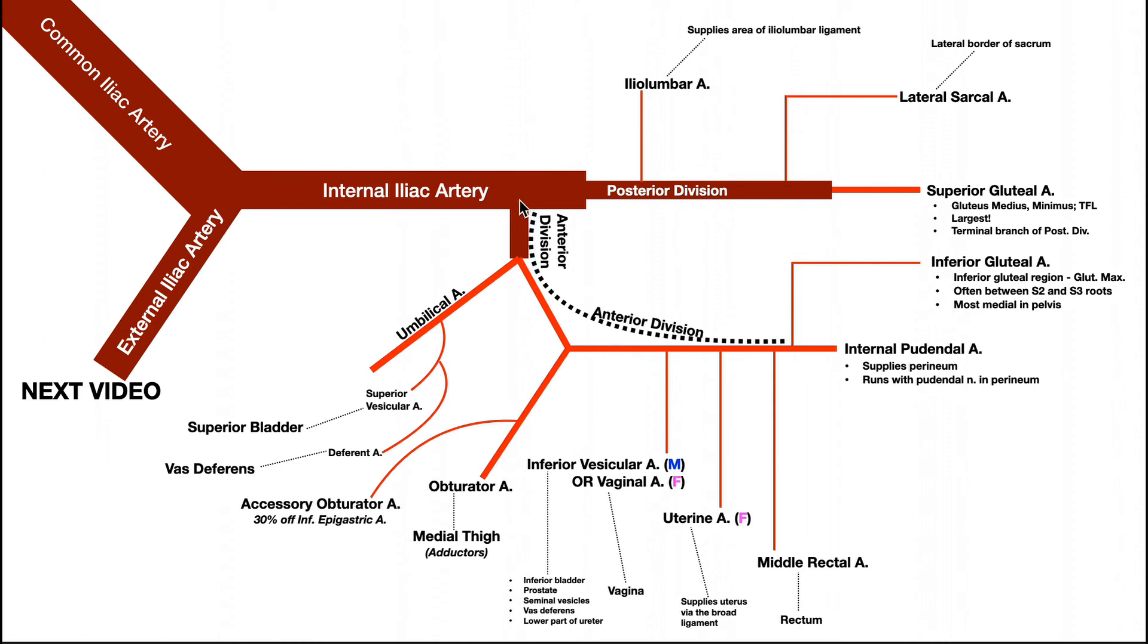And the anterior division is all of this right here, this entire curve. This is all the anterior division of the internal iliac artery right here. Just follow my mouse. And we can see here that the anterior division gives off several branches. It gives off an umbilical artery right here. Right here it gives off an obturator artery.